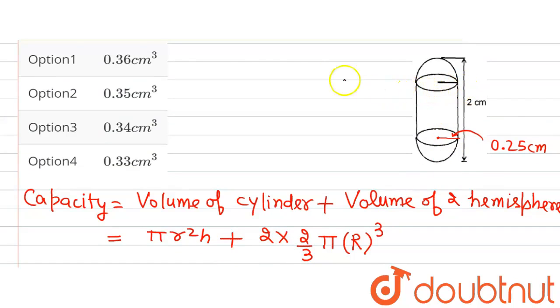And the height of the cylinder will be 2 cm, because the length of the whole capsule is 2 cm, minus this length that is 0.25 and this length that is 0.25. So 2 minus 0.25 plus 0.25 which will give us 1.5 centimeters. So the length of the cylinder is 1.5 centimeters and this length is nothing but the height of the cylinder.